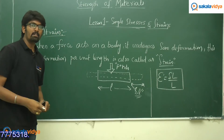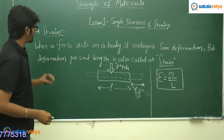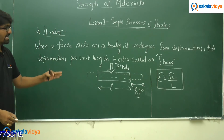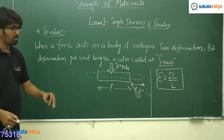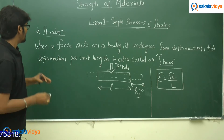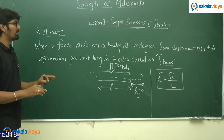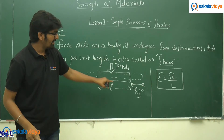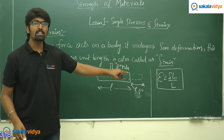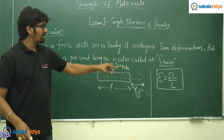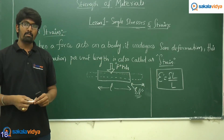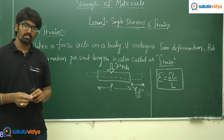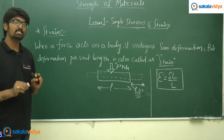In summary, when a force acts on a body it undergoes some deformation, and this deformation per unit length is called strain. Mathematically, strain = δL / L, which is change in length by original length.